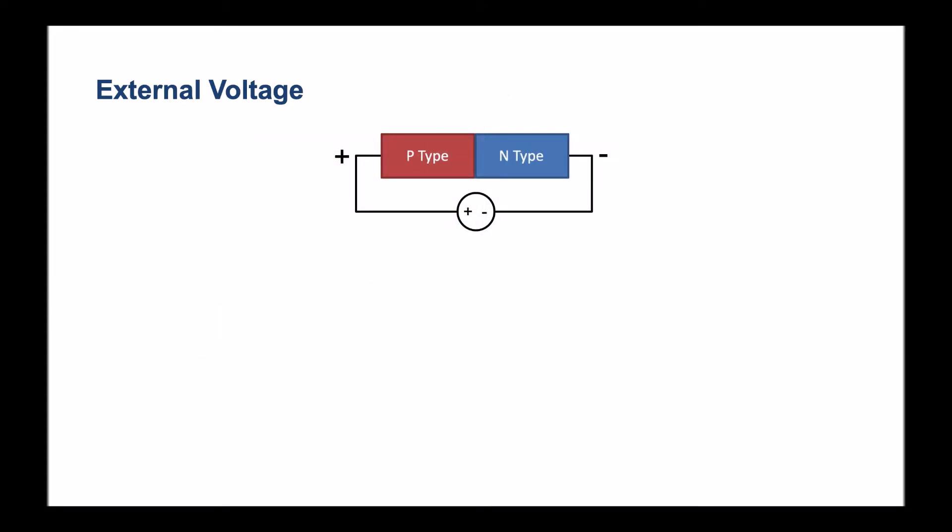Here is a p-n junction that's forward biased. We've connected the positive end of a power supply, a DC power supply, to the p-type region, and we've connected the negative to the n-type region.